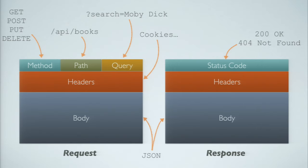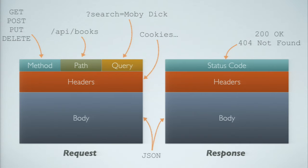Then there's the path — traditionally a path to a file on a server, but in RESTful APIs it shows us which endpoint we're going to use. There's also the query, which goes on the same line as the path, where we can specify parameters. Then we have headers, which is where cookies are sent back and forth. And there's the body of the request, which in the RESTful APIs we'll be talking about will contain JSON. Responses are slightly simpler — there's the status code: 200 if everything is okay, or errors like 404 or 500, but there's a long list of status codes defined in HTTP.